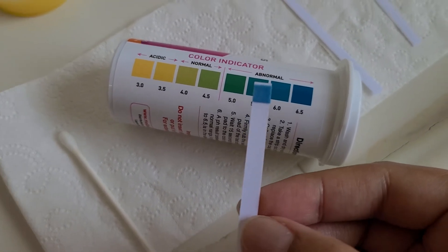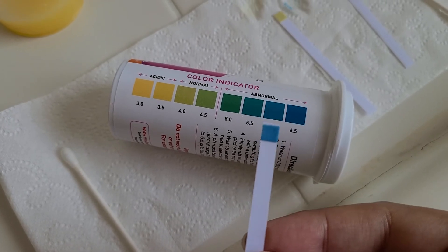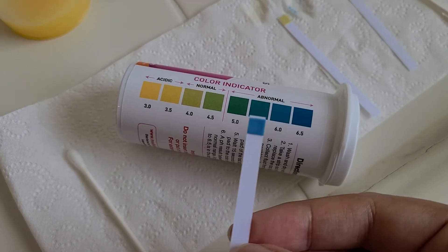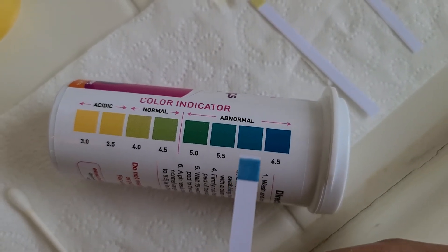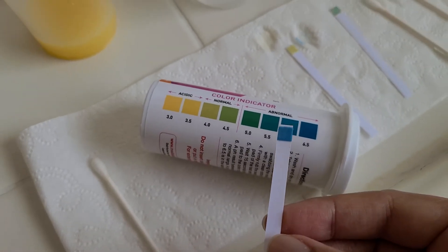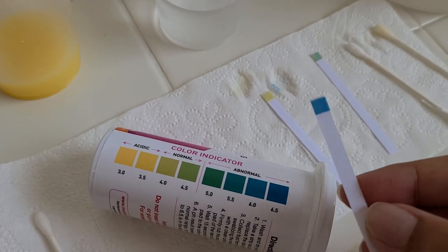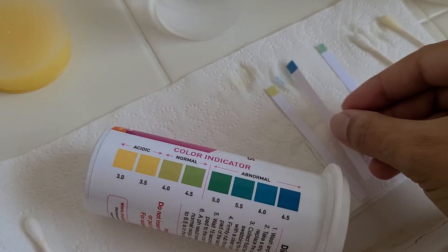And this looks like it's probably like a 6 or 5, closer to 6. So this is like a result of 6, and that's what the result would look like if you had an abnormal result for the vaginal pH.